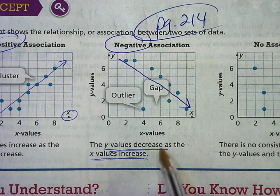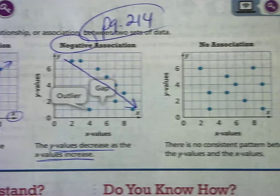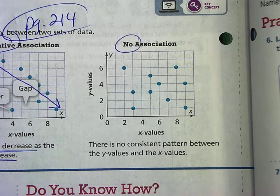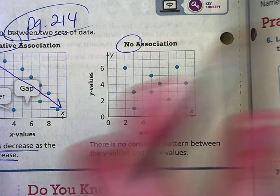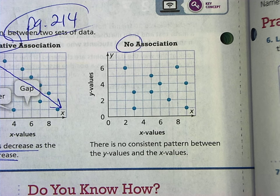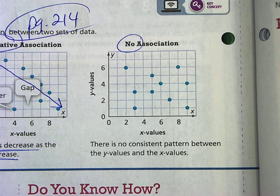And then no association means the X values and Y values, there really isn't a pattern. They're just kind of all over the place. We can't tell if this data is going up or down. It's not positive or negative. It's just no association.